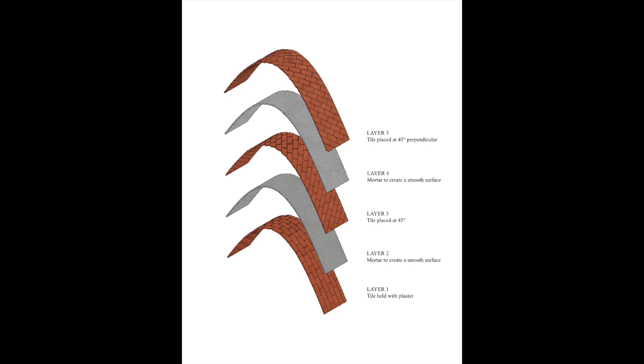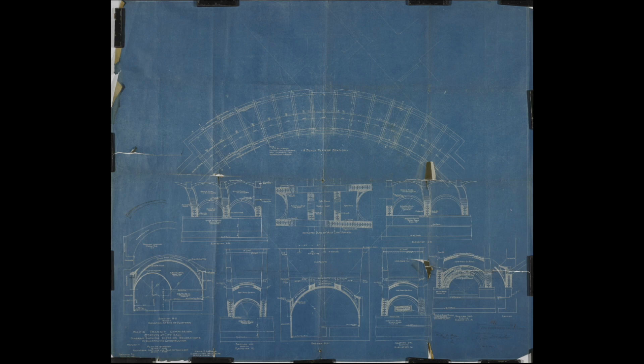For phase 3 we were challenged to create a dry stack arch, an arch without using mortar. And this posed a particular problem for us since we were replicating the Guastavino arches and domes in the city hall station.